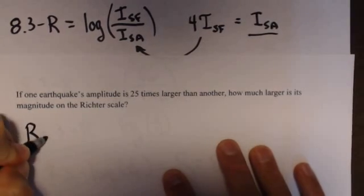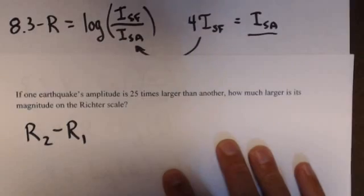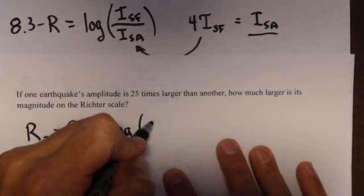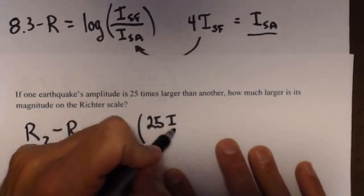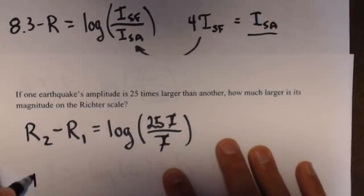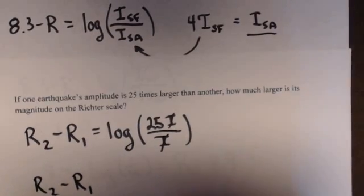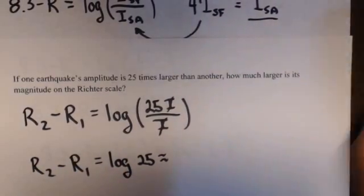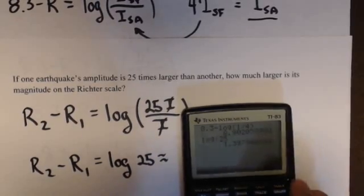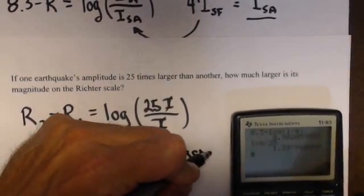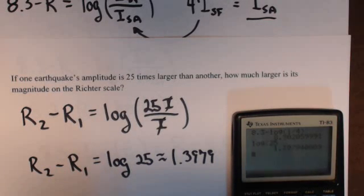If one earthquake's amplitude is 25 times larger than the other, how much larger is its magnitude on the Richter scale? Well, we know that the difference in their magnitude, so I'm going to say just R2 minus R1, that's the difference in their magnitudes on the Richter scale. We know that that's equal to the log of the ratio of their intensities. So, 25 times the intensity of the smaller one versus the bigger one. Again, these cancel. So, R2 minus R1, that's the difference in their Richter scale magnitude, is equal to the log of 25, which is approximately 1.3979. That's how far apart they would be on the Richter scale if one earthquake was 25 times stronger.